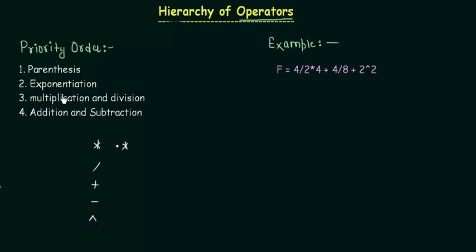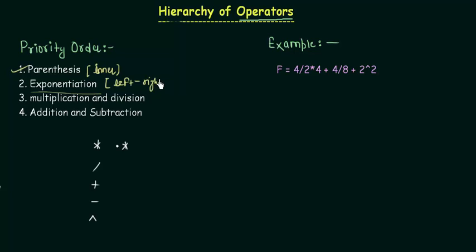Now we will see the priority of the same. Parentheses are solved first, and within parentheses the inner parenthesis will be operated first. After parentheses we have to solve the exponent — that is, exponentiation — and it is evaluated from left to right, which means the exponent appearing on the left will be solved first.